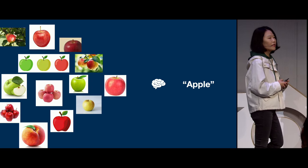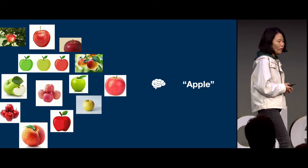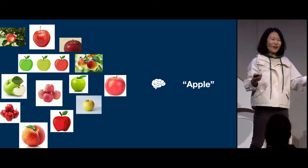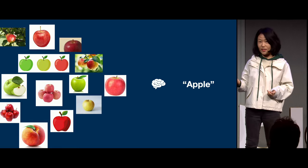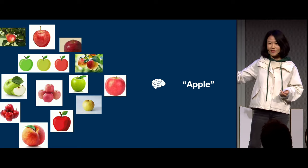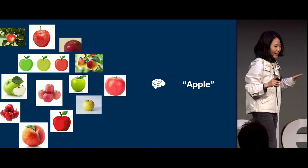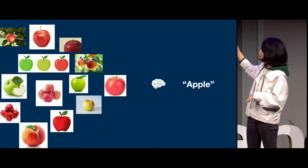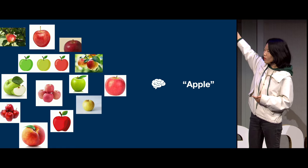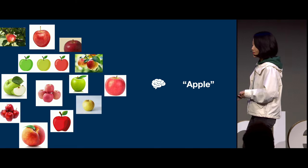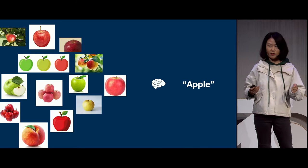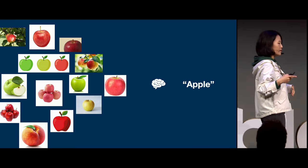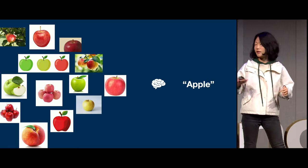Data quality is very important. For example, what is this? For us humans, it's very easy to tell this is a peach rather than an apple. But unfortunately, our AI doesn't know that. If we gave this peach photo to our AI to learn the same way we give it apple photos, the result is that our AI probably cannot tell the difference between the apple and the peach. This is how data influences and shapes AI.